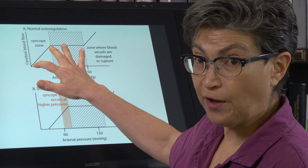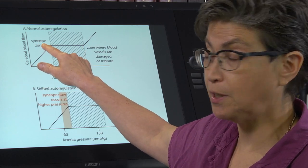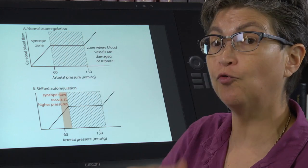So another word for faint is syncope. That's the spelling, S-Y-N-C-O-P-E, syncope. So we want to avoid syncope.